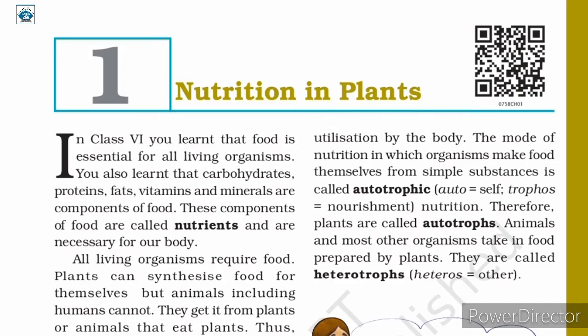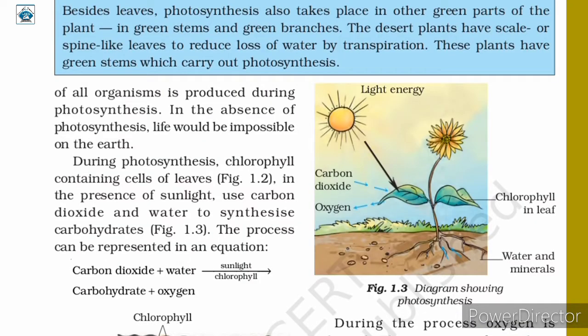Hello students, let us continue Chapter 1: Nutrition in Plants. In the previous class, we discussed photosynthesis. We know that the process can be represented in an equation where carbohydrate and oxygen are released during photosynthesis.